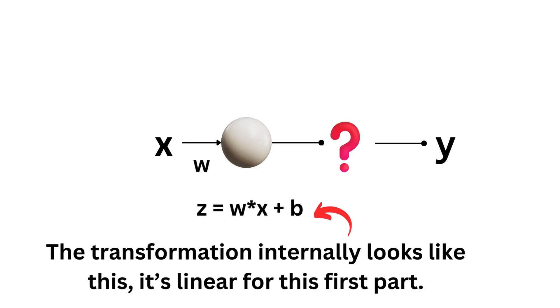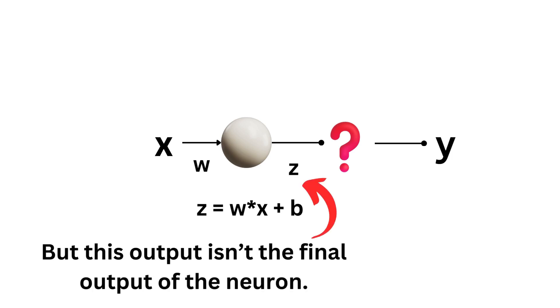The transformation internally looks like this. It's linear for this first part. But this output isn't the final output of the neuron.